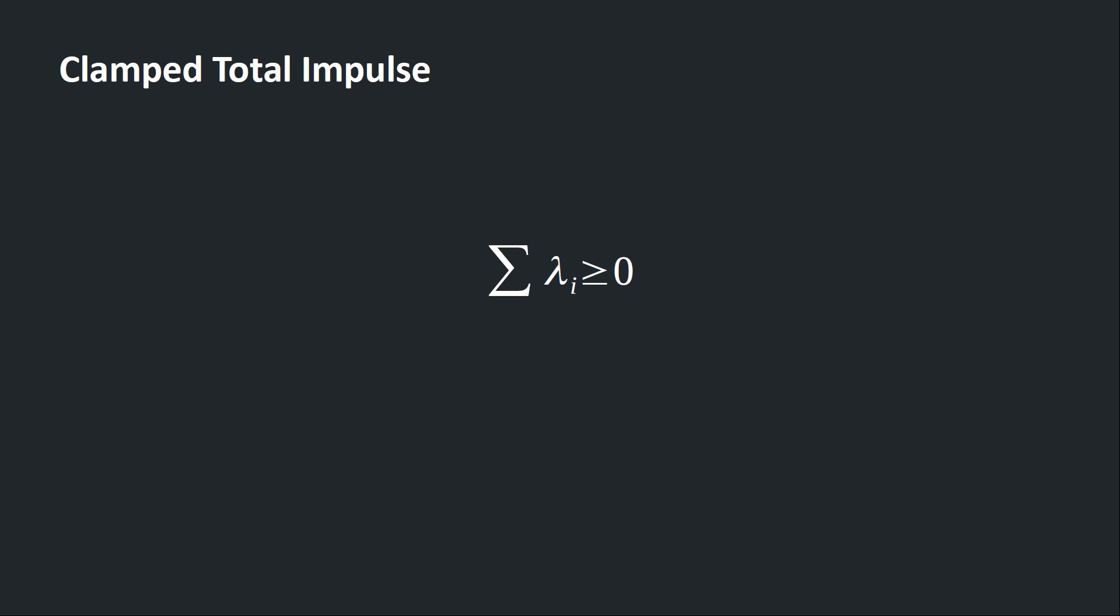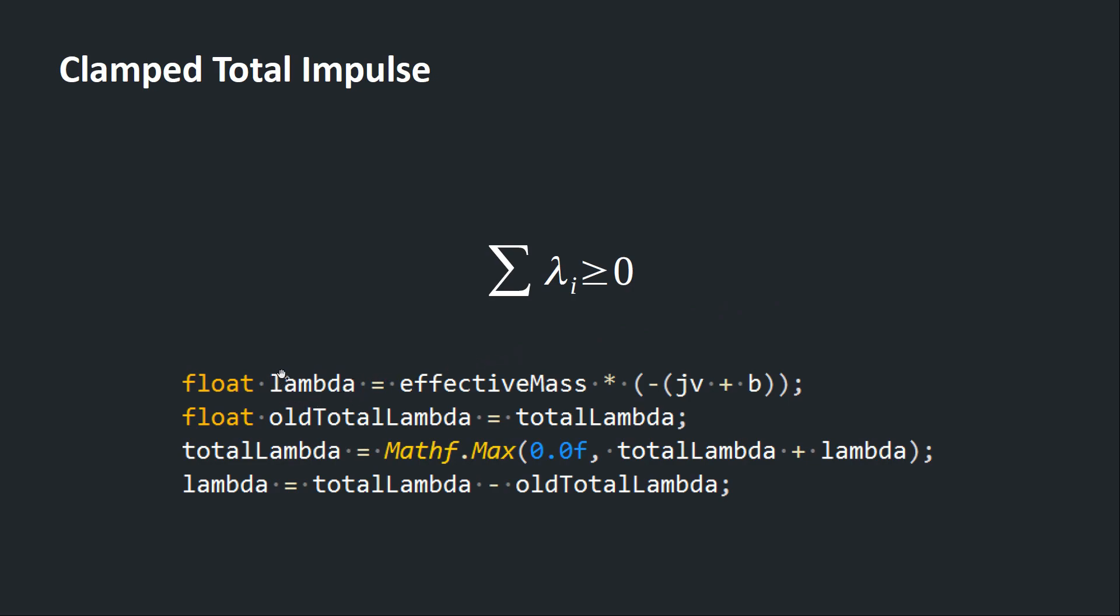So every time we iterate through a contact constraint, we need to make sure that the accumulated corrective impulse so far has to be clamped to be larger than or equal to zero. Here's how to do it in code. We compute the lambda for our current iteration, and then we cache the previously accumulated lambda. We add that to the current lambda, and then we clamp this total value to be greater than or equal to zero. Finally, the difference between this newly clamped total lambda and the total lambda from the previous iteration is the actual lambda we'll apply within this current iteration.